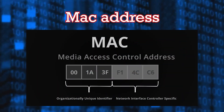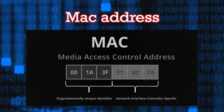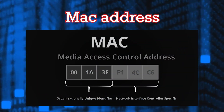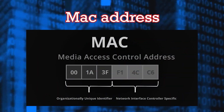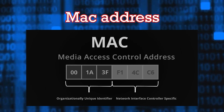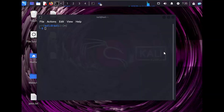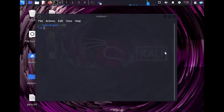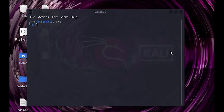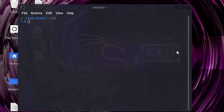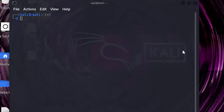In this video I will explain how to change the MAC address every 5 seconds in Kali Linux. First, check the MAC address — write ip a.